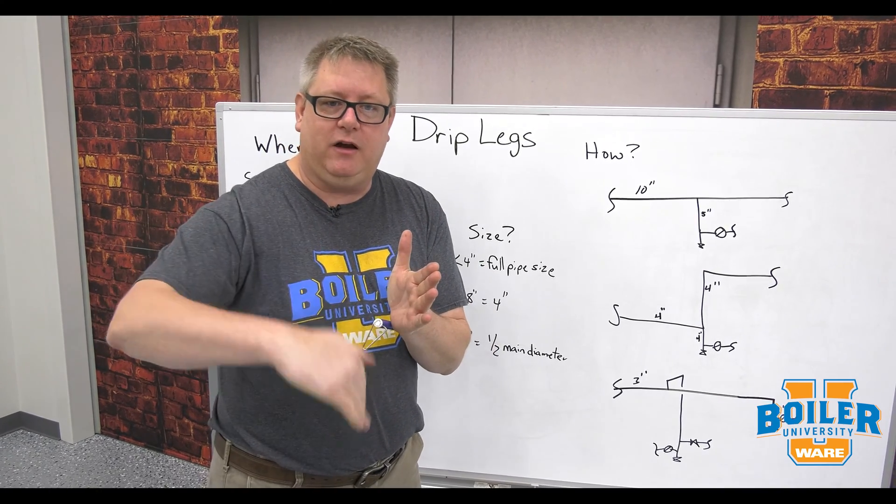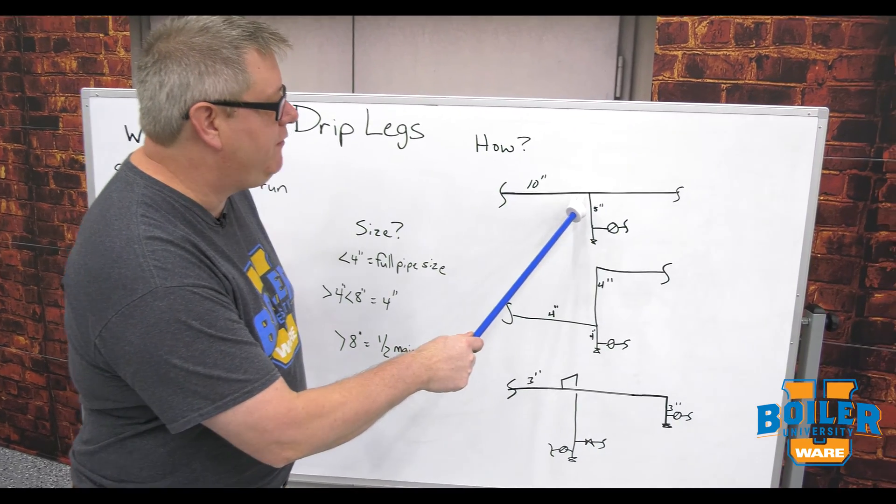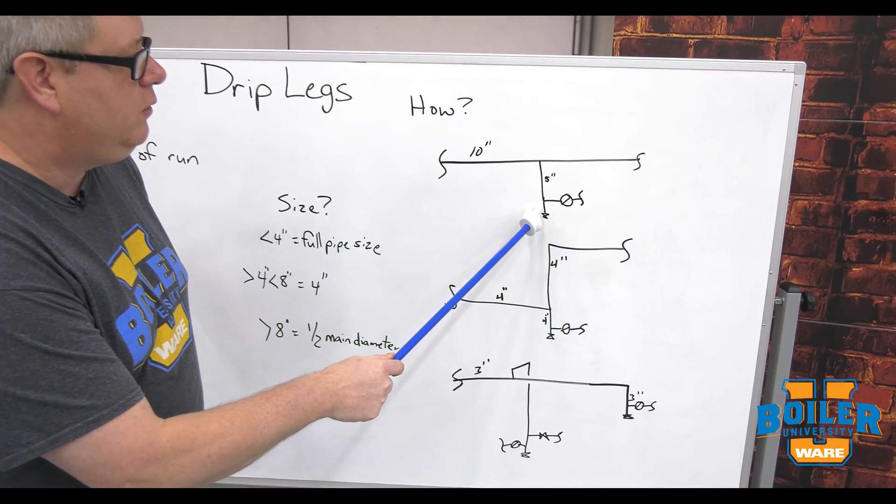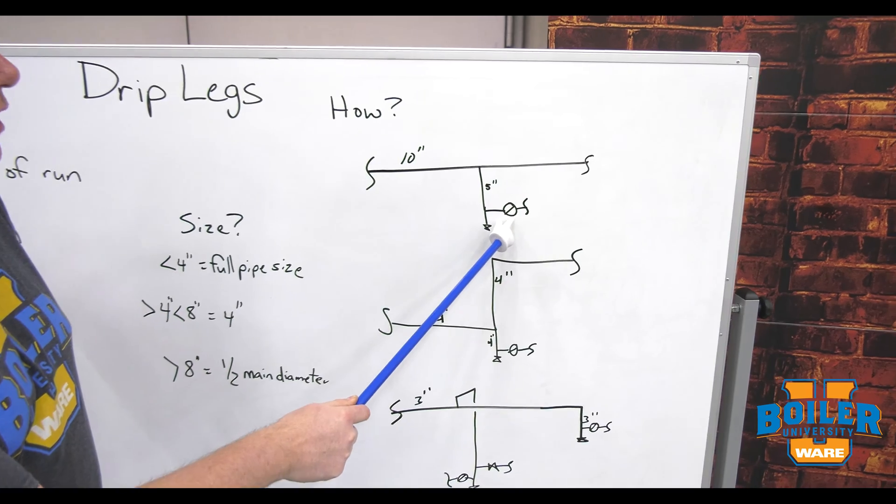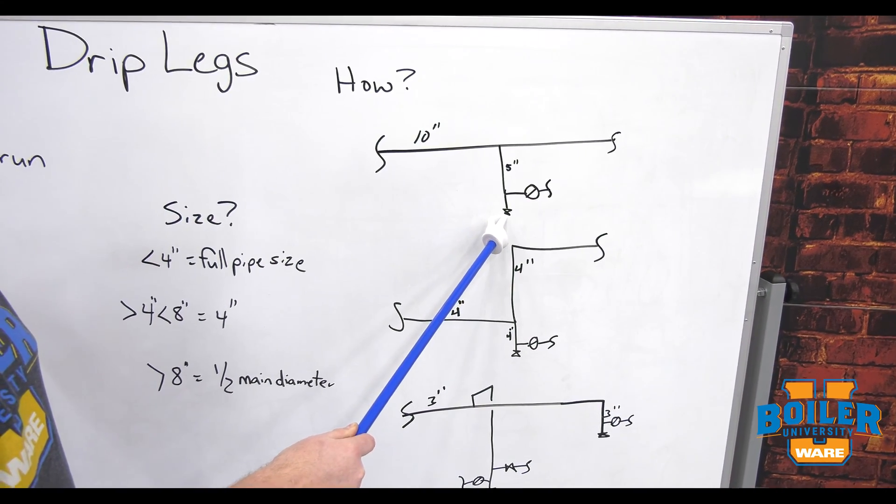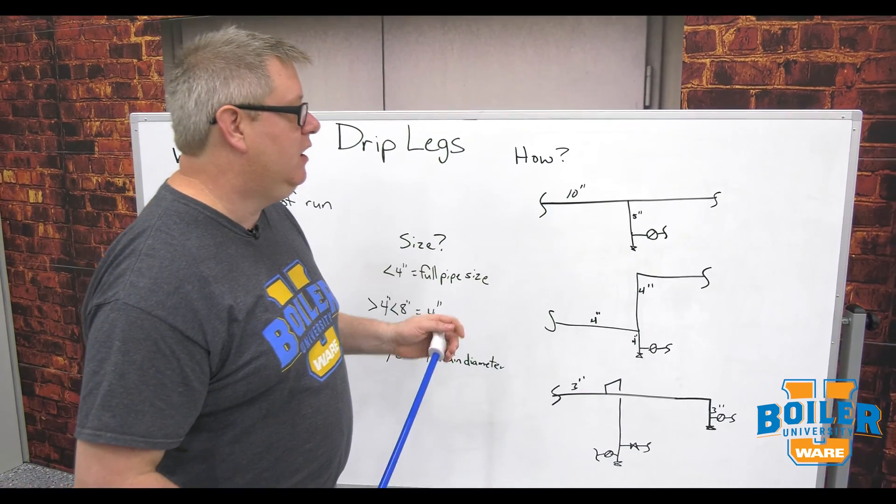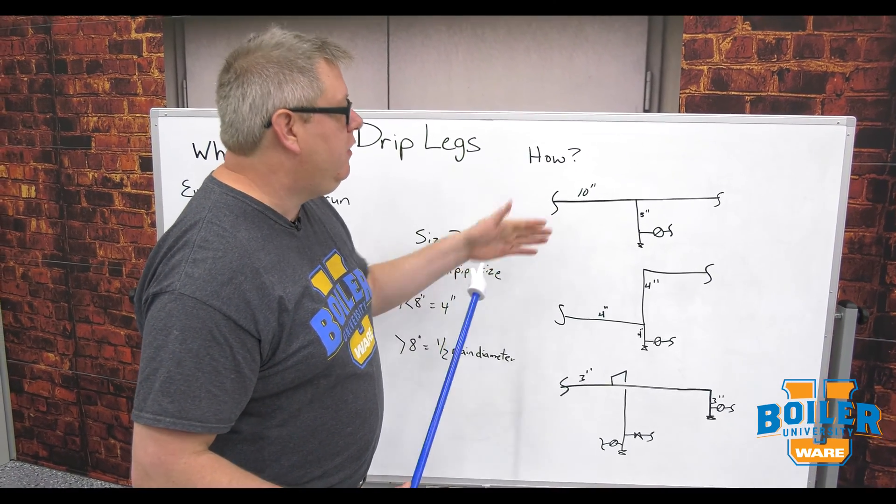In this case we would come directly off the bottom of the header. We would tee out the side with our trap, and we always want to put a drain on that as well for system startup. We can open that drain, clear condensate for troubleshooting, etc. There's some additional piping associated with the trap.